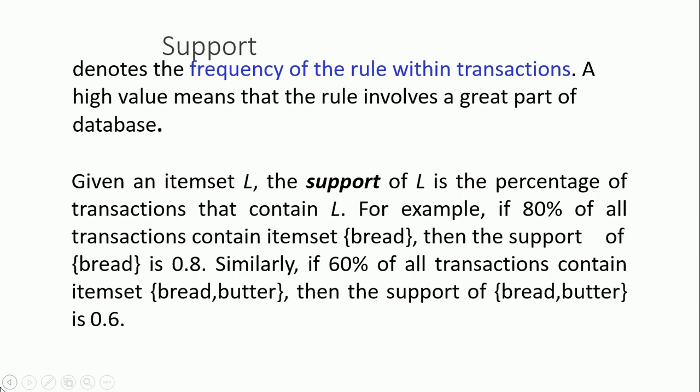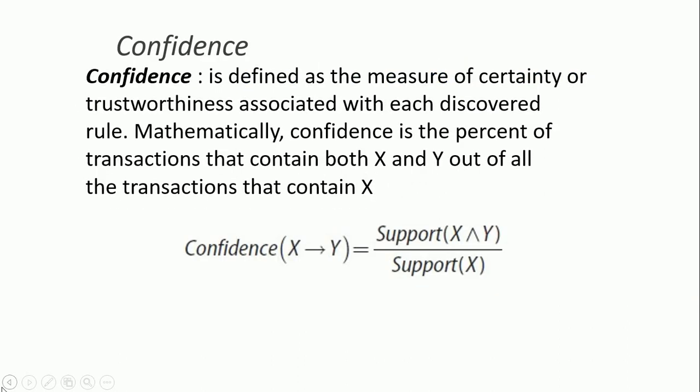For example, given an item set L, the support of L is the percentage of transactions that contain L. For example, 80% of all transactions contain the item set bread and butter — that means the support of bread and butter is 0.6. That is how you understand support.